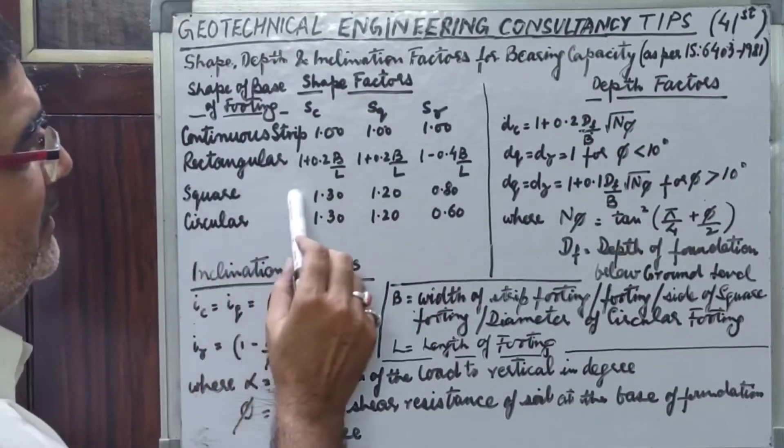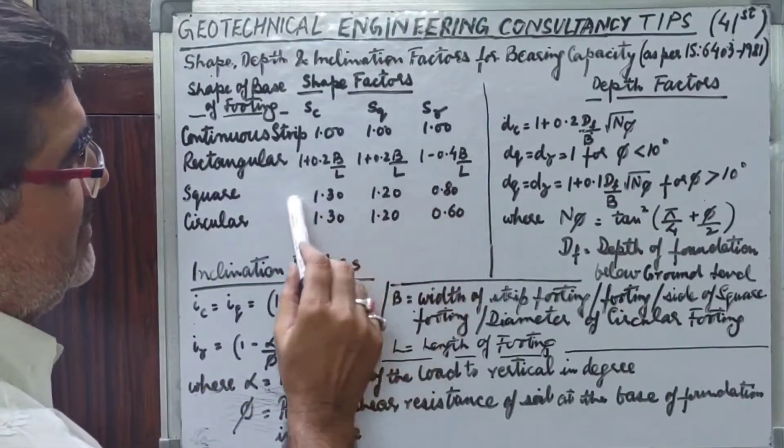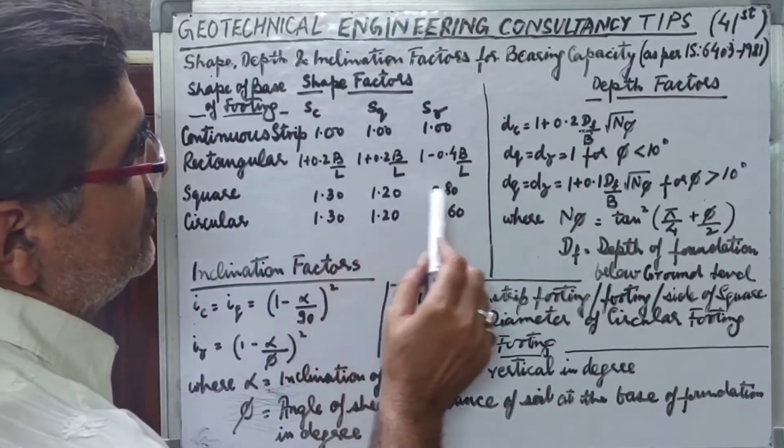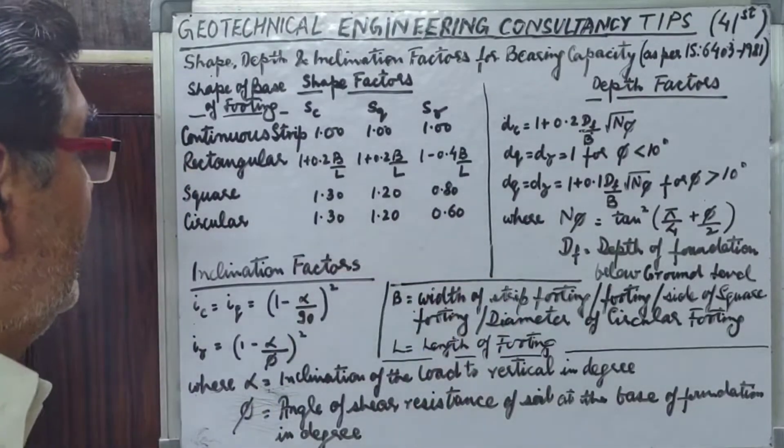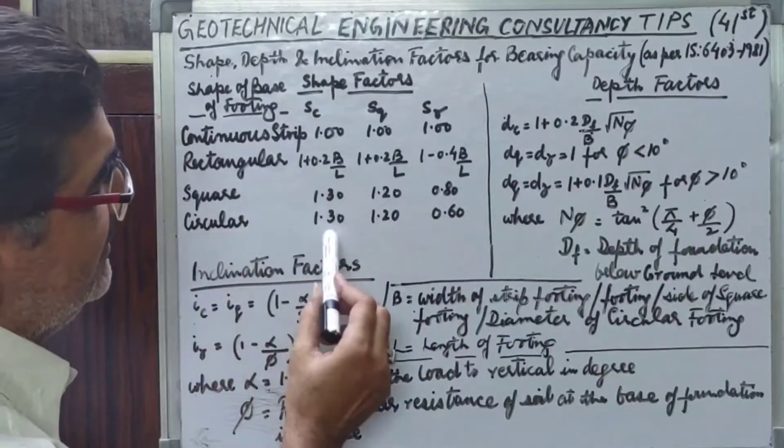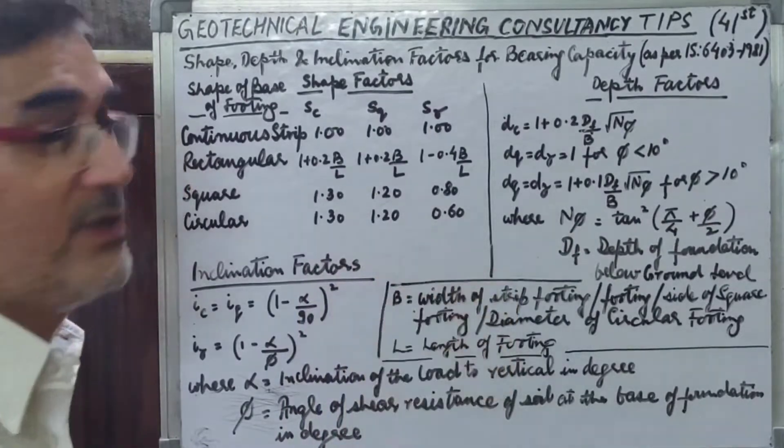In square footing, Sc, Sq, S gamma respectively are 1.3, 1.20, and 0.80. In any circular footing this is being taken as 1.30, 1.20, and 0.60.